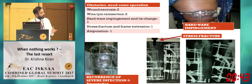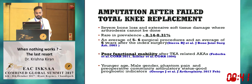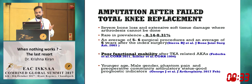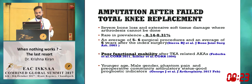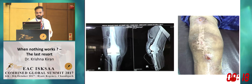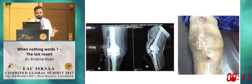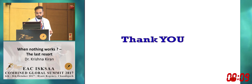Amputation after failed total arthroplasty is rare — 0.1 to 0.3% in literature — occurring after an average of five to six surgeries and six years after the index surgery. Functional outcome after amputation in post-TKA failure is quite poor. One personal case involved a hinge prosthesis that developed a fulminant fungal infection four years later, requiring amputation. Thank you for your attention.